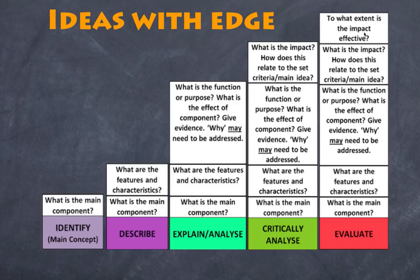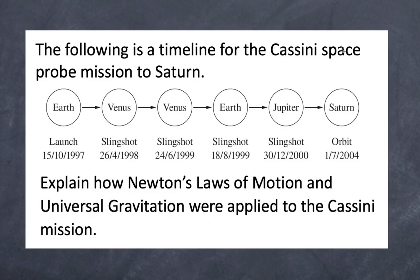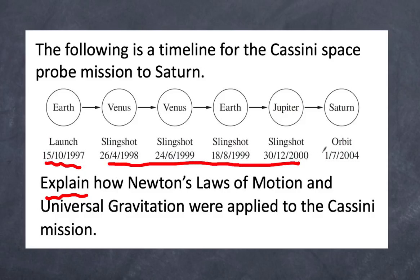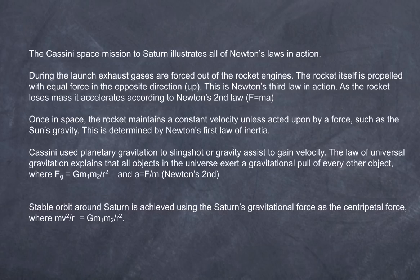To make this clearer, I'm going to use two physics exam questions and show you how Ideas with an Edge might work. Here's a question from the 2015 HSC paper: given a timeline for the Cassini space probe mission to Saturn, you're asked to explain how Newton's laws of motion and universal gravitation were applied to the Cassini mission. This is an explain question, so I would not jump straight into the cause and effect. There are three key aspects: launch, the slingshot, and orbit.